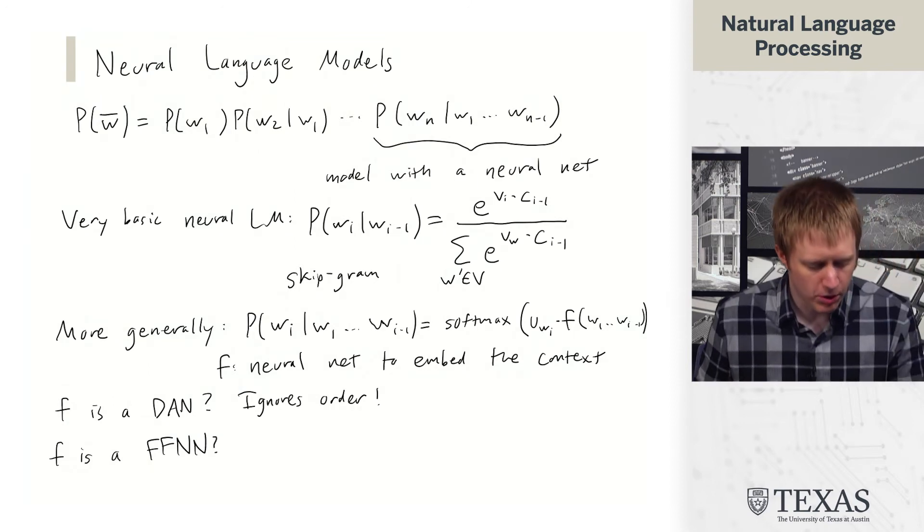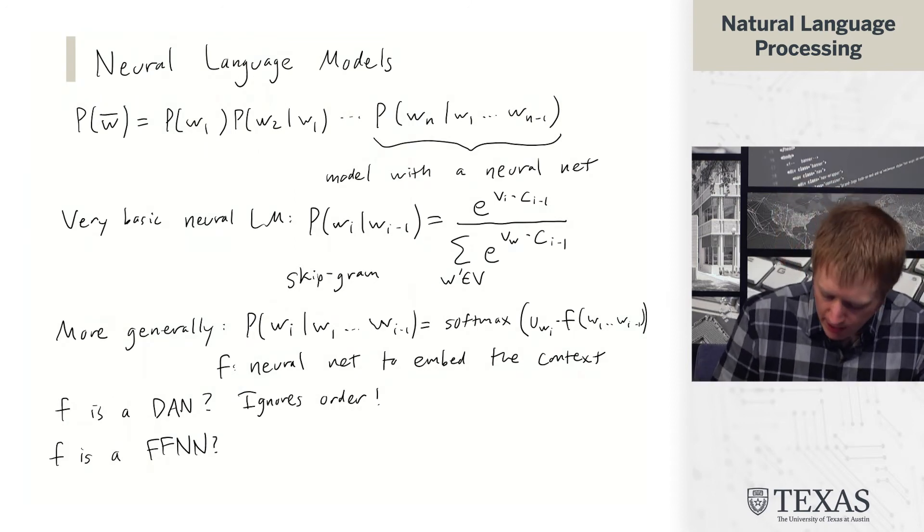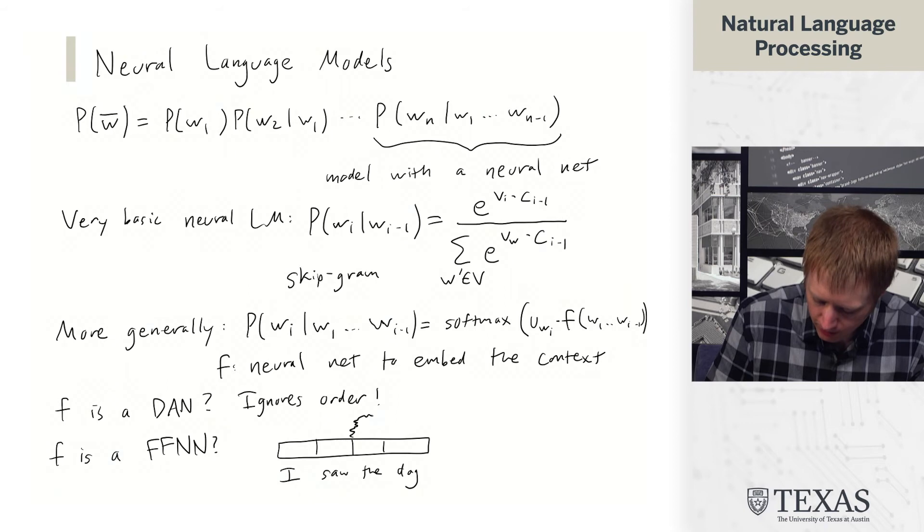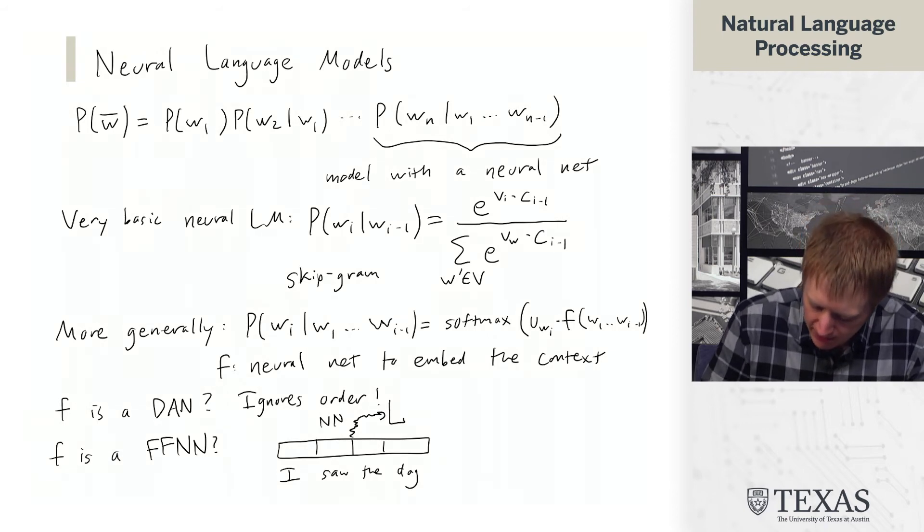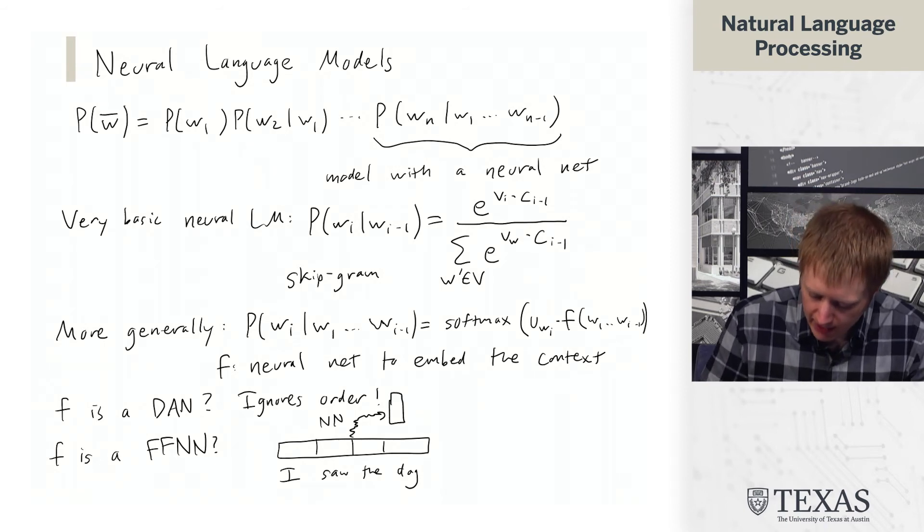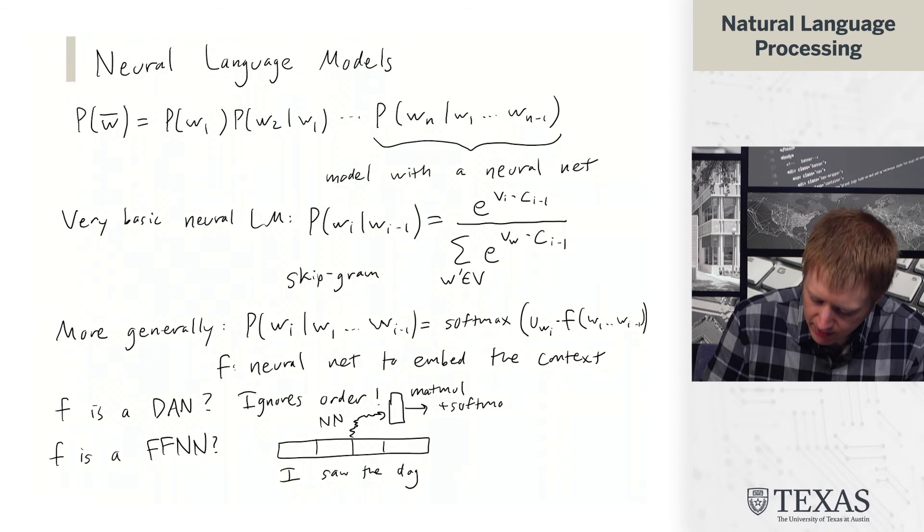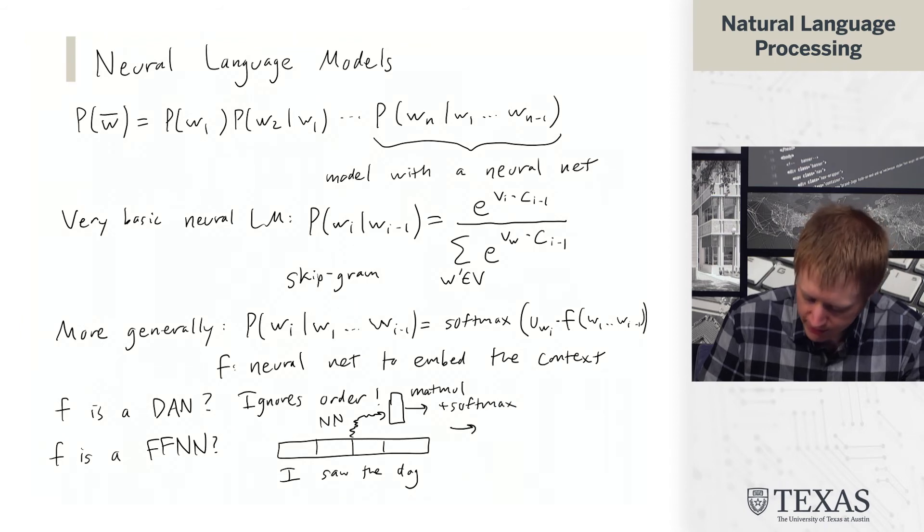We could also explore using a feedforward neural network. And so what this looks like is, let's say our context is I saw the dog. We have some sort of neural net here that embeds this into a vector. And then we put through a final matrix multiply in softmax. And that yields the probability of WI given W1 through WI-1.